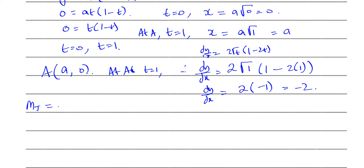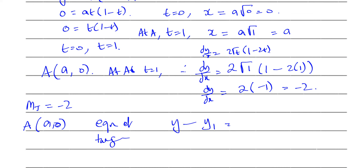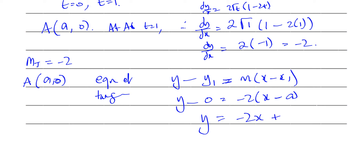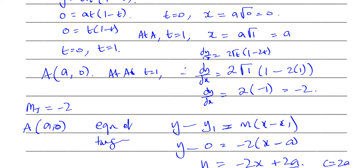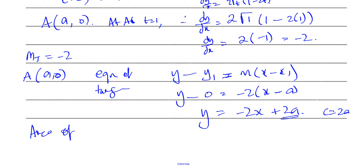Using y minus y1 equals m times x minus x1, the equation of the tangent at A is y minus 0 equals minus 2 times x minus a, which gives y equals minus 2x plus 2a. The y-intercept is 2a, so point B is at (0, 2a). Therefore the area of triangle OAB equals a half times base a times height 2a, and the 2's cancel to give area equals a squared.